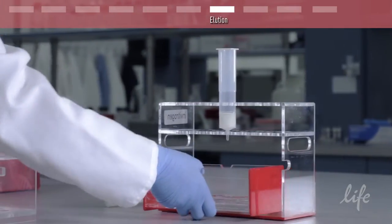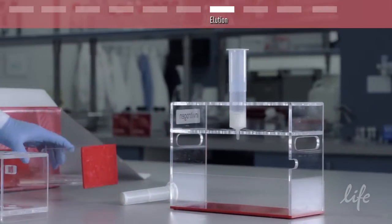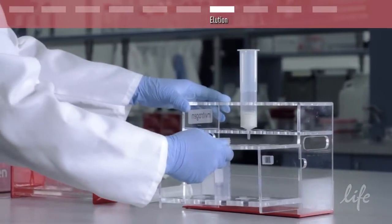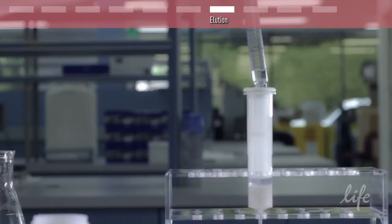Elution is the final step to release the plasmid DNA from the column. Add the elution buffer to the column and collect the eluate.